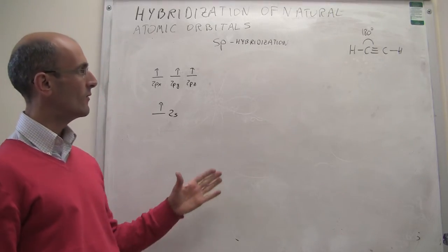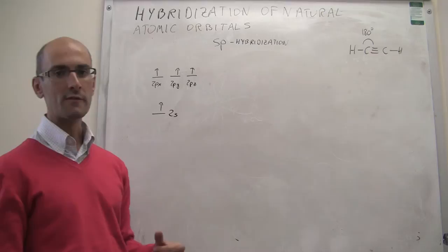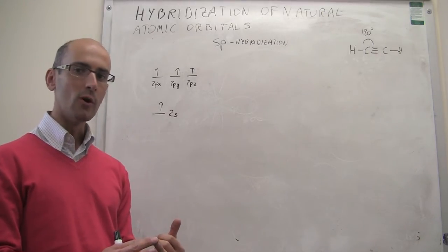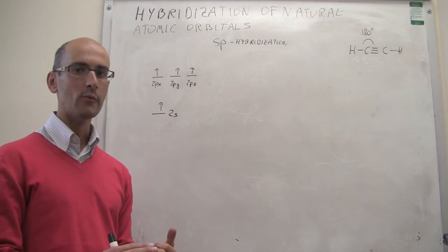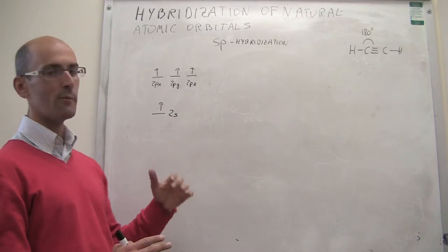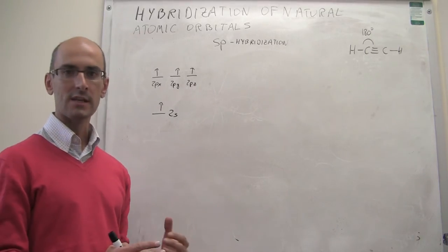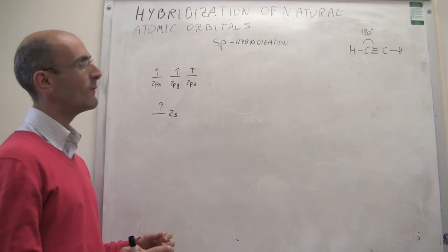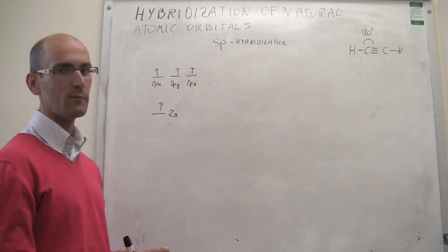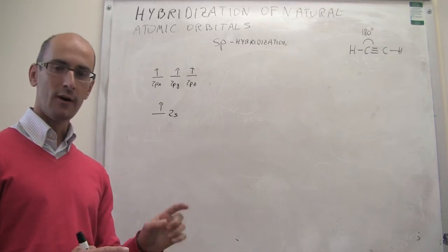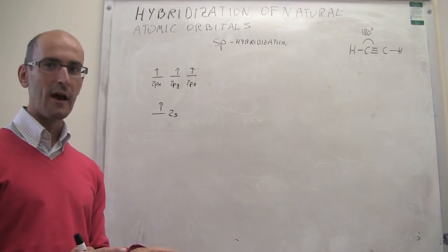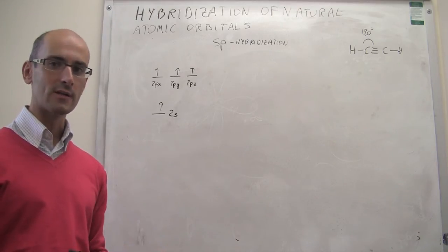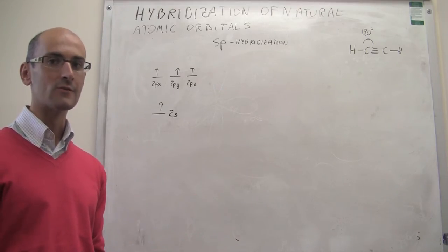Looking at ideas like this and what we've seen from sp3 and sp2, you should be able, on your own, to come up with the mixing rules — how many orbitals mix and how many natural orbitals don't mix — and come up with a balanced bond theory diagram for that molecule. I actually encourage you to pause the video right now and try to do it on your own.